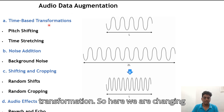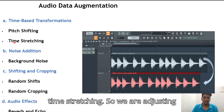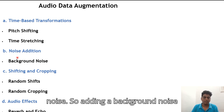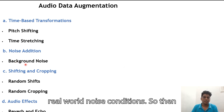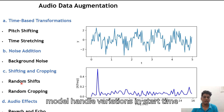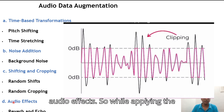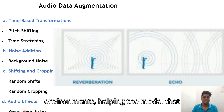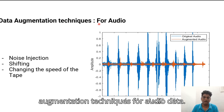Audio-based augmentation includes time-based transformations such as changing the pitch of audio recordings without affecting the duration, and time stretching — adjusting the speed or duration of the audio without changing the pitch. Adding background noise helps the model become more robust to various recording environments and real-world noise conditions. Shifting moves the audio signal in time, helping the model handle variations in start time or delays in recordings. Applying audio effects like reverb and echo simulates different acoustic environments, helping the model generalize better across different recording settings.